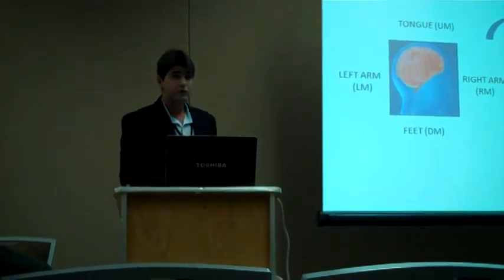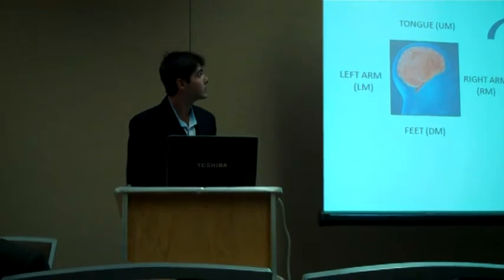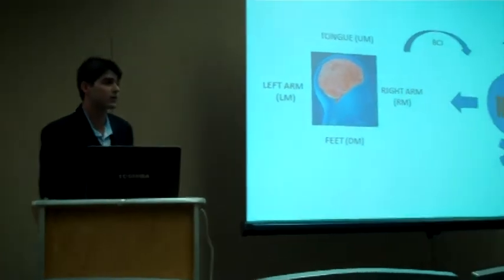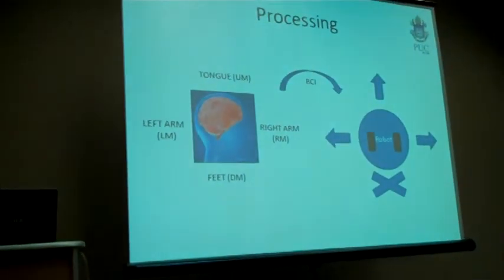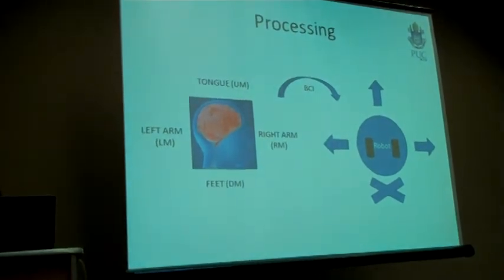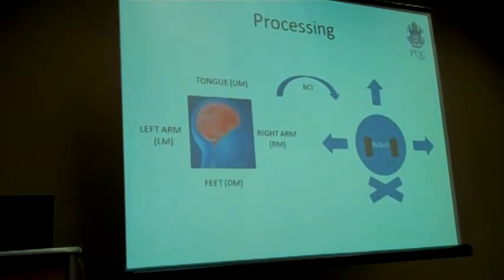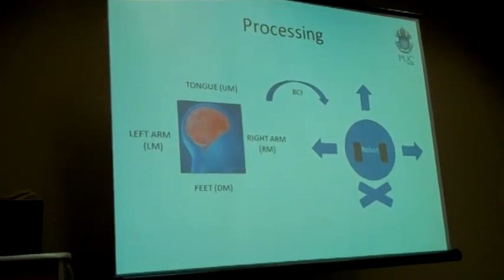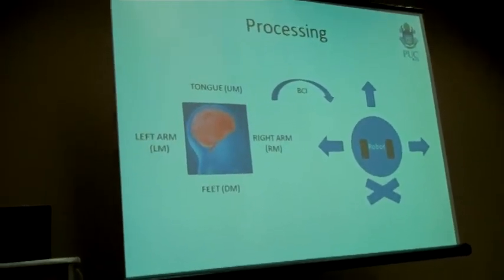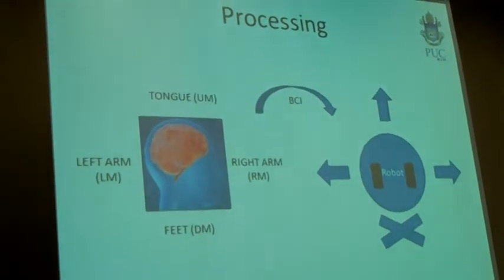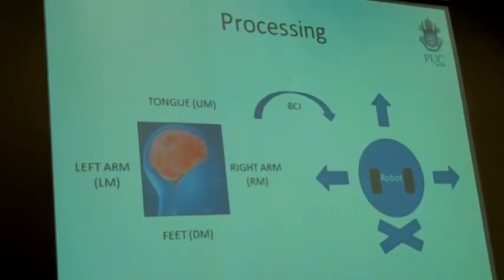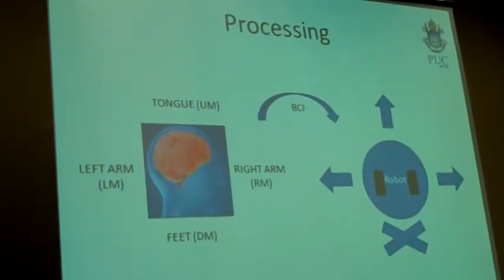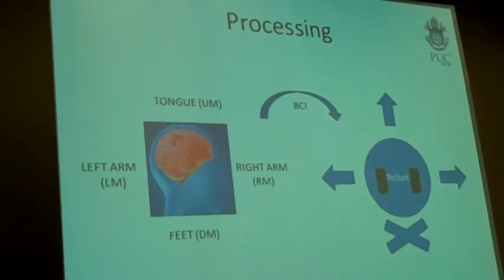With the feature vector in our hands, we can classify some specific mental tasks. The mental tasks chosen for this work were the imaginary movement of the user's tongue, that I call the up movement, the imaginary movement of the left arm and the right arm, respectively the left movement and right movement, and also the imaginary movement of the feet, that I call the down movement.